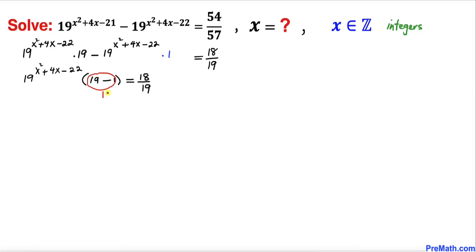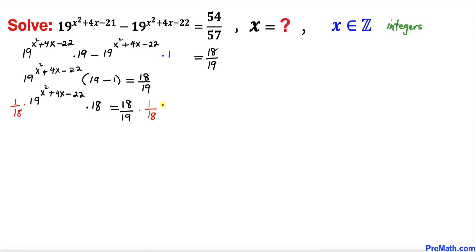Since 19 minus 1 equals 18, the equation becomes 19 to the power of (x squared plus 4x minus 22) times 18 equals 18 divided by 19. Now we multiply both sides by 1 over 18. The 18 on the left cancels, and on the right the 18 cancels as well, leaving us with 19 to the power of (x squared plus 4x minus 22) equals 1 over 19.